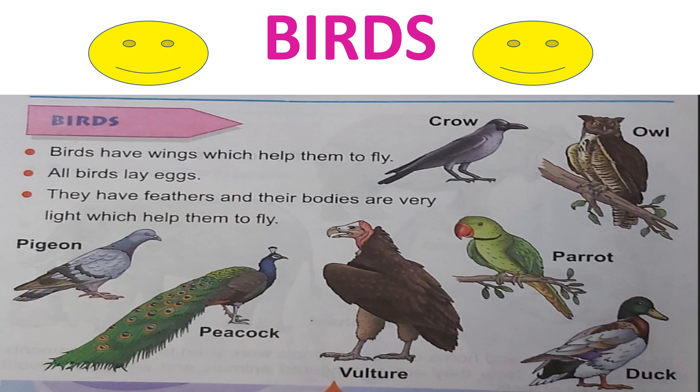See the given pictures: crow, parrot, duck, vulture, peacock, pigeon — so many birds are around us. Now children, if you want to draw any picture in your rough book, you can draw and write down their names and color it. But before doing this, you have to learn all these things.